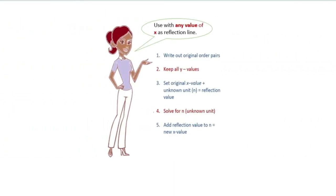Please note that this 5-step process can be used with any value of x as the reflection line: x equals 2, x equals negative 5, any value for x.